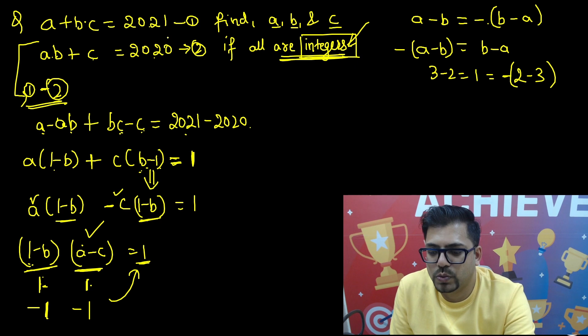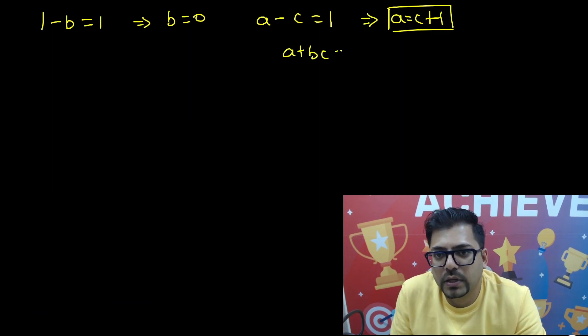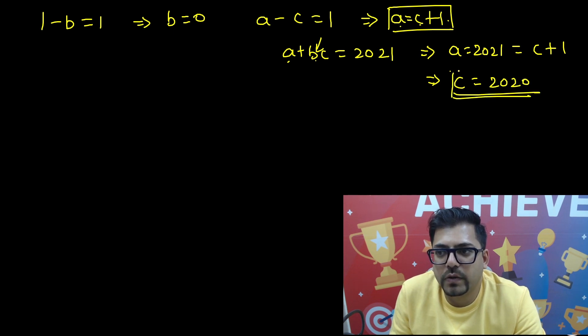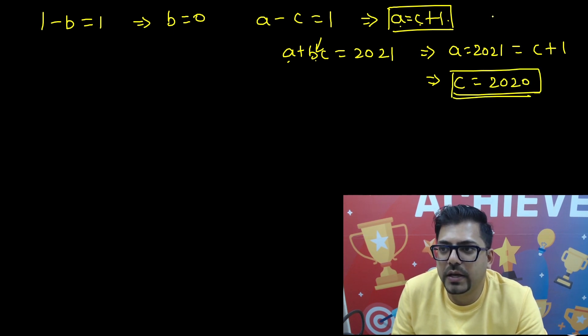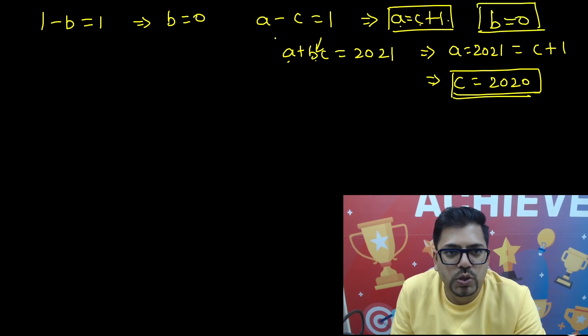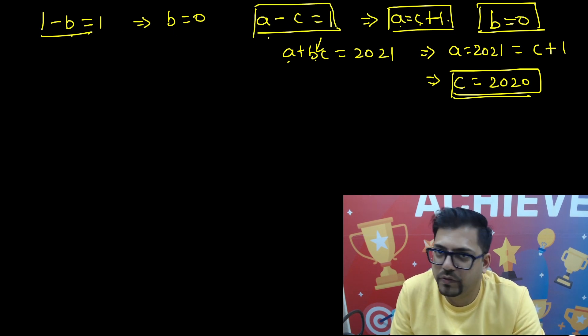And the second bracket also, A minus C is also 1. So if A minus C equals 1, from here I get A equals C plus 1. So if I get A equals C plus 1, I will have to put these values in any of the equations. So let us put it in the first equation, A plus BC equals 2021. Now you know B is 0, so this is all done. Now A is equals to 2021. So this implies A equals 2021.